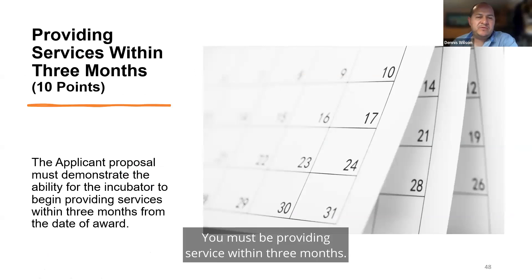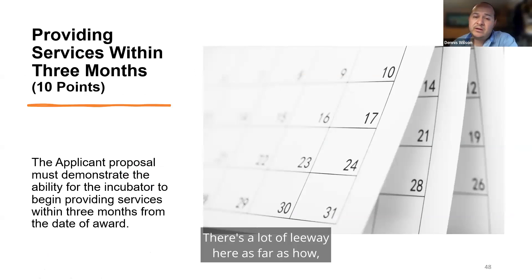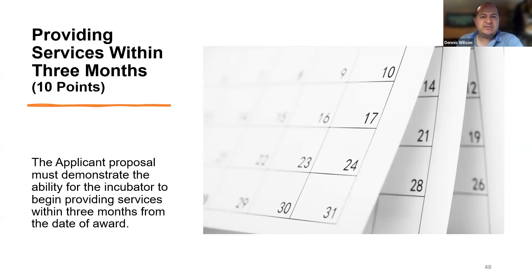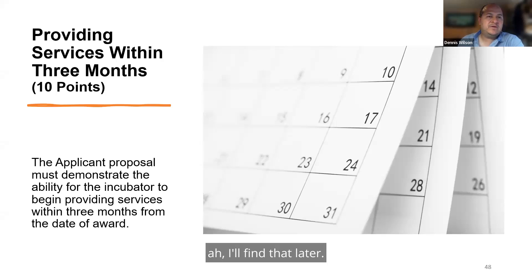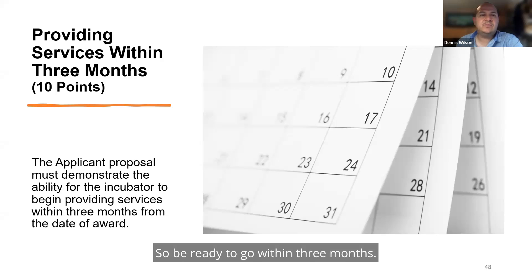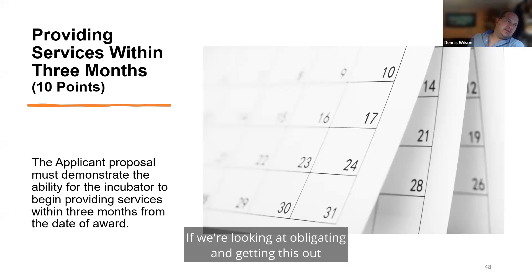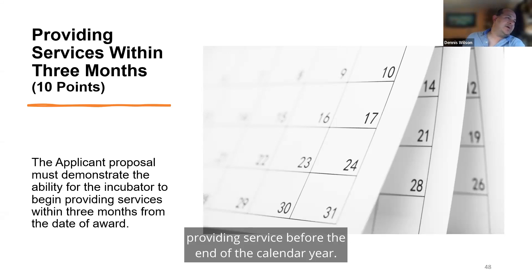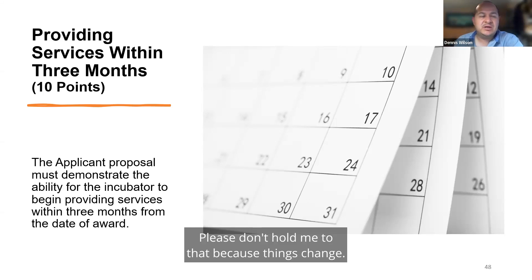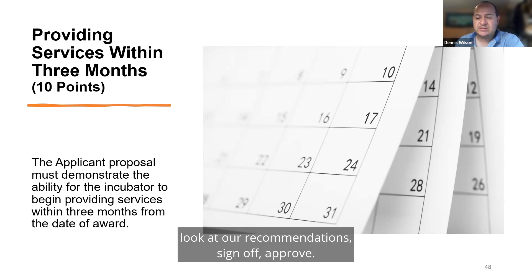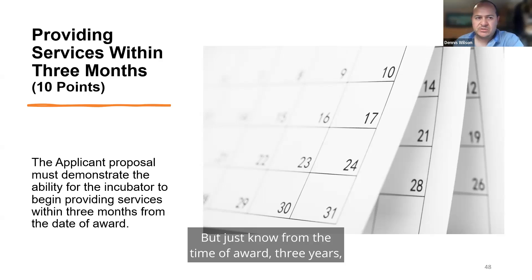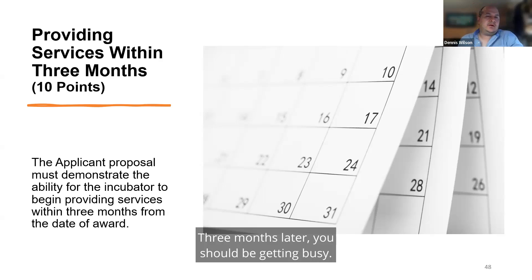This is statutory — you must be providing service within three months of award. There's leeway in how you do it, but as long as you're providing service per your project goals and objectives, you're fine. That's found at 25 USC 5803(B)(1)(C). If we're looking at obligating and getting this out before the end of the fiscal year — starting hopefully around the beginning of fall — you'd be looking at operational service before the end of the calendar year. From the time of award, three months later you should be getting busy.